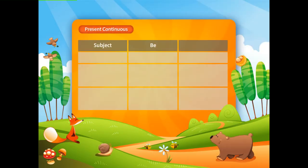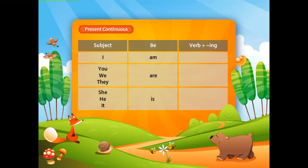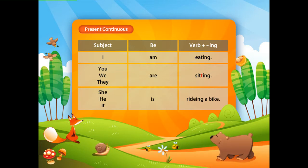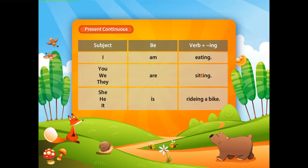The form of the present continuous looks like B-verb plus verb plus ing. The subject and the B-verb must match. Find the B-verb that matches your subject — we talked about this in Lesson 11. Then add the verb plus ing.